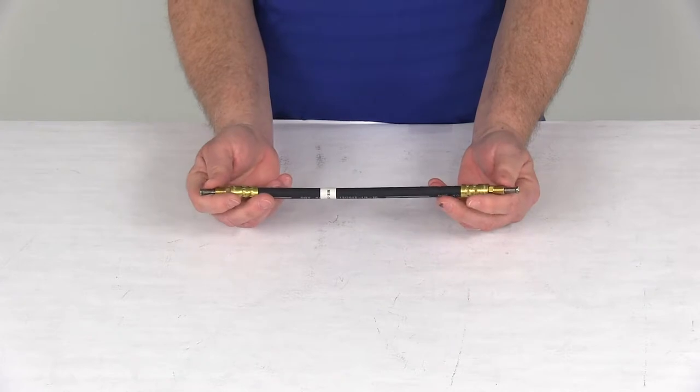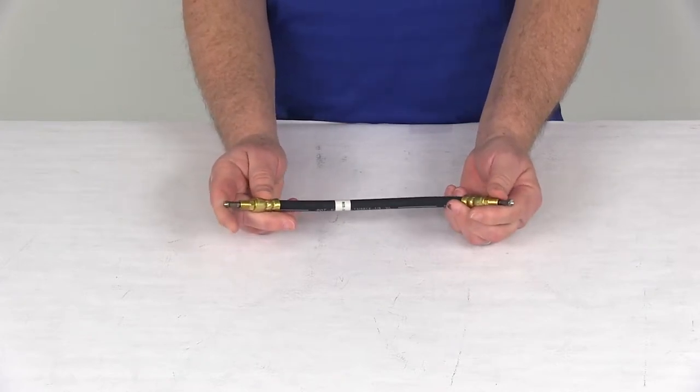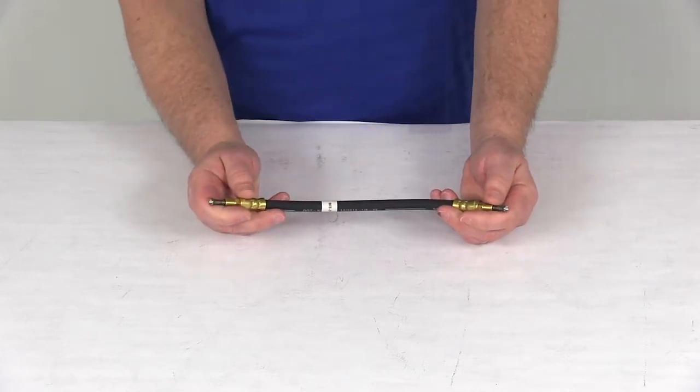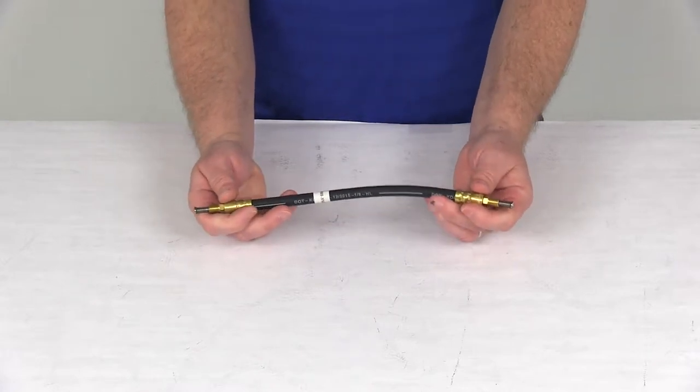If you notice on the ends of each of these, they have the stainless steel flares which help resist corrosion, and they're a lot stronger than brass to reduce splitting. This hose is ideal for boat trailers.